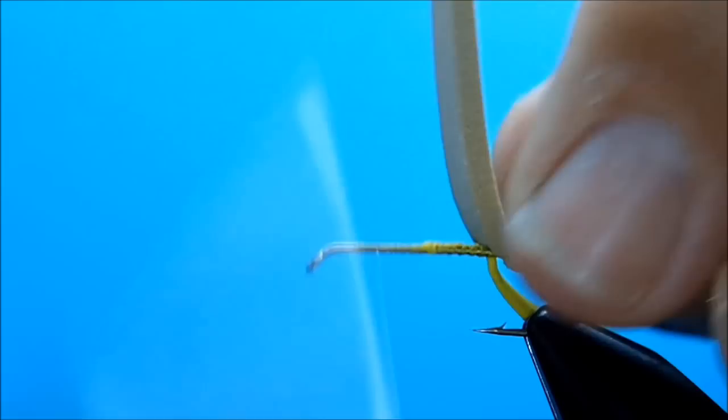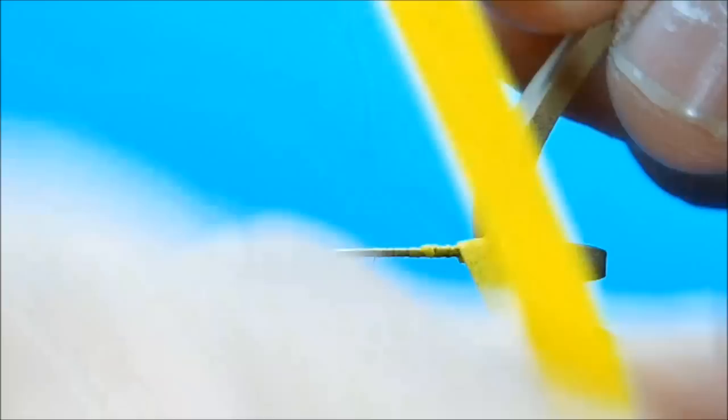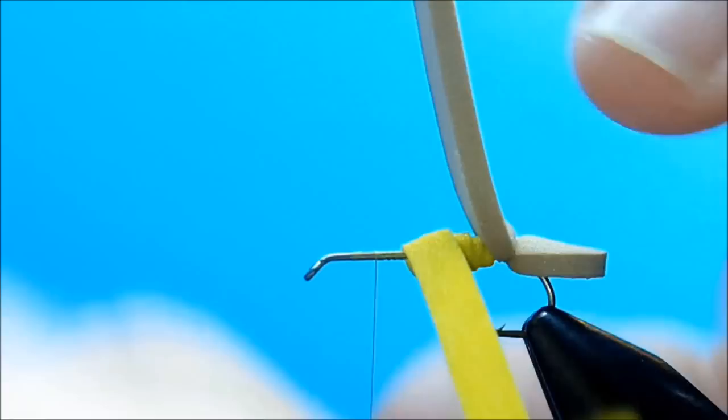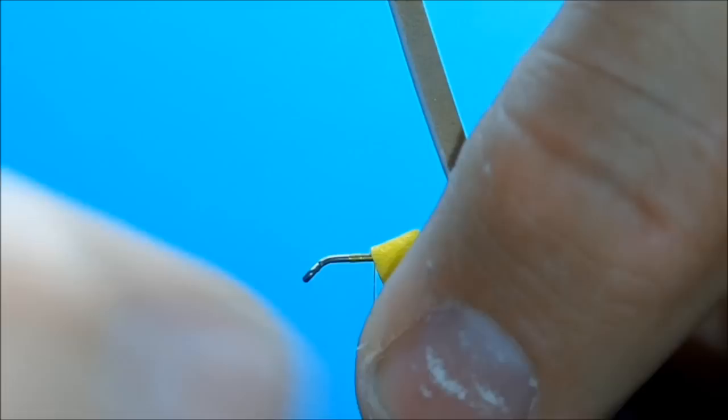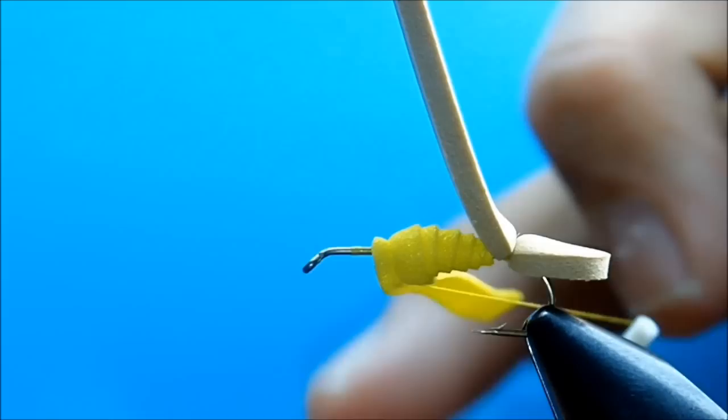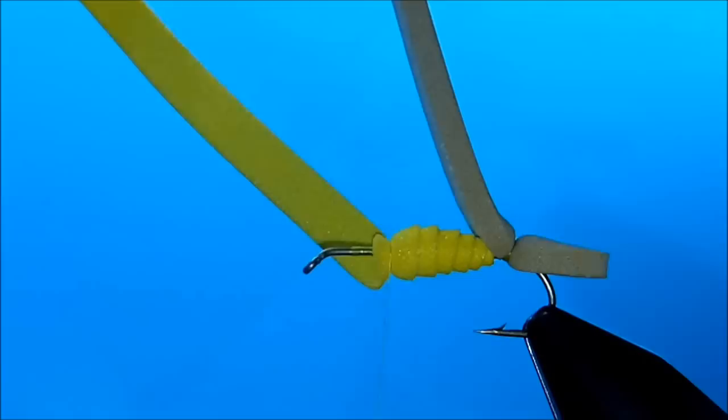Now when you first wrap with this 1mm foam, you've got to be very careful because it will break. So once you get the first one on, you can really then kind of tighten it up a little bit. And I'm just going to wrap this forward, creating a nicely tapered and segmented body. You can kind of see it building up there. I'm going to grab it right there and that'll help form the front of the body.